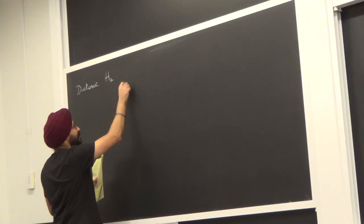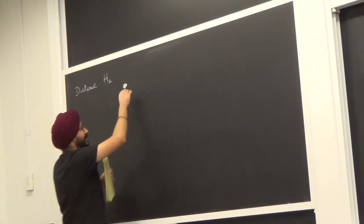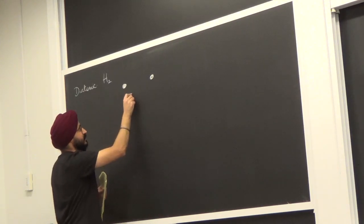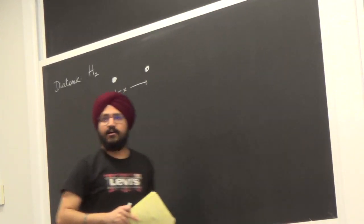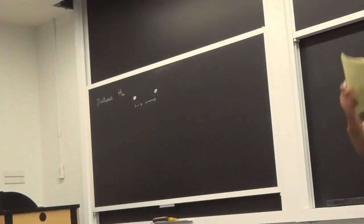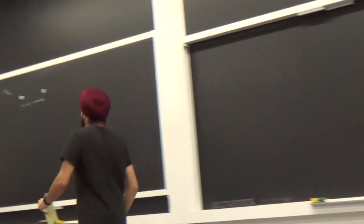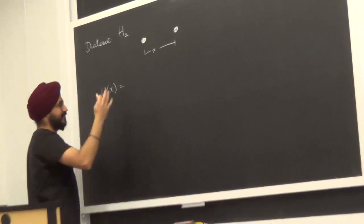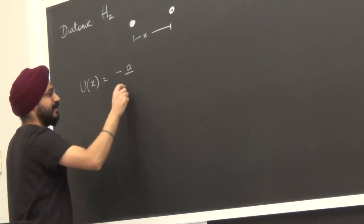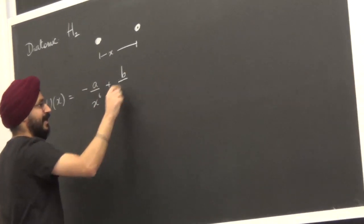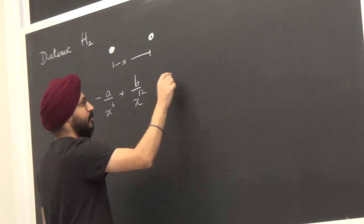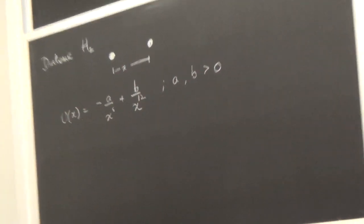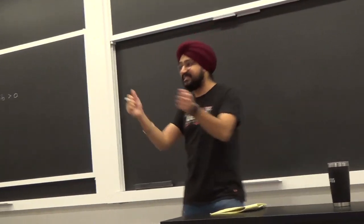Pretty simply, it's just two atoms of H bonded to one another. The distance between them is x. We've worked out the physics of this molecule already. The potential energy function U(x) of this hydrogen molecule is given by U(x) = -a/x⁶ + b/x¹², where a and b are positive constants. That's a model for how the energy varies with the distance between the two particles.